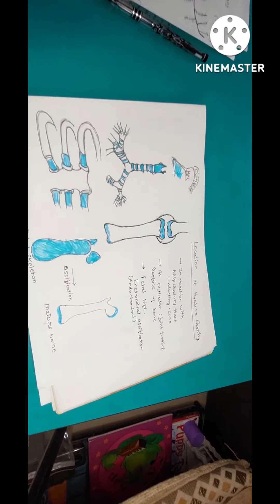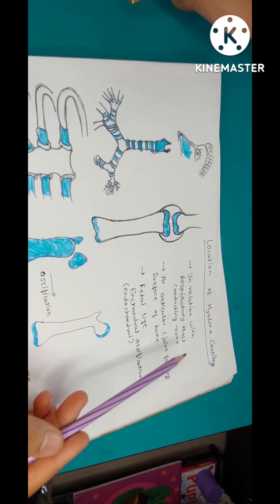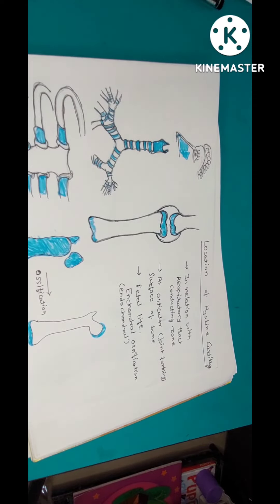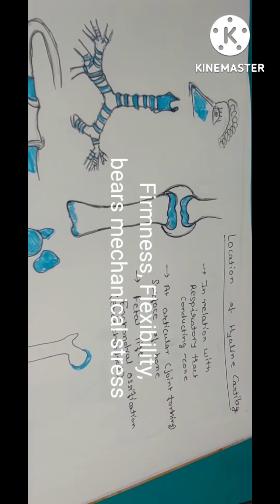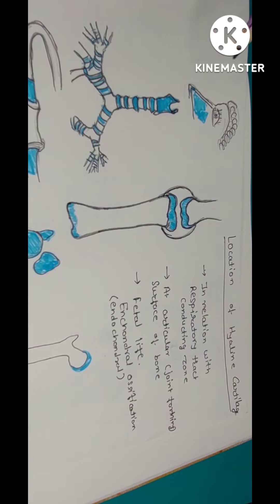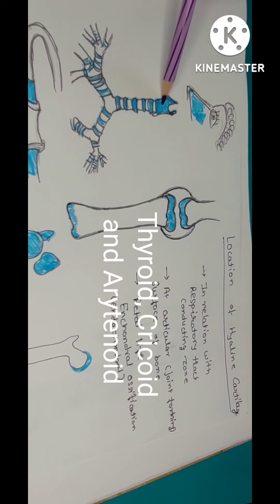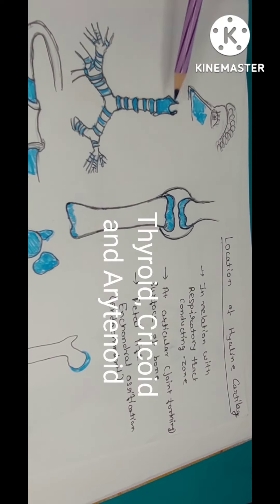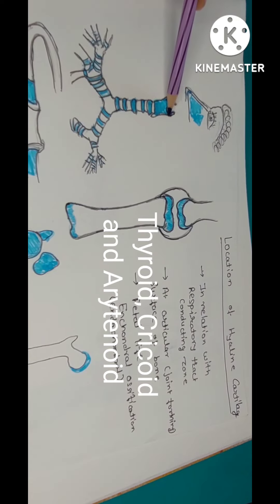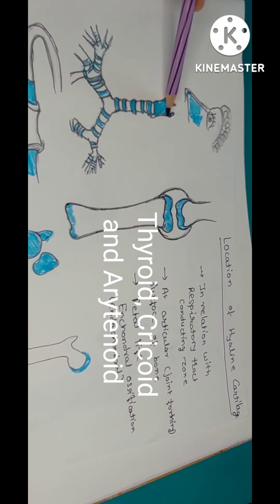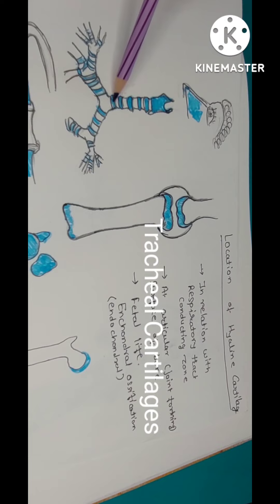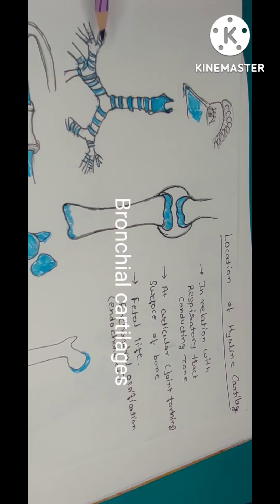It is located in relation with the respiratory tract where firmness is important. So that is the nasal cartilage, the septal cartilage of the nose, then laryngeal cartilage — that is the thyroid, cricoid and most of the part of arytenoid — tracheal rings, then bronchial cartilages. These are also hyaline cartilage.